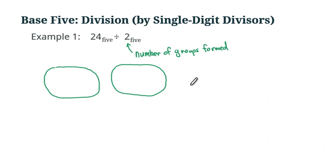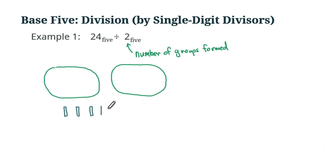We have two longs and four units for the dividend. Let me put down the pieces — actually we only want two longs, so let me correct that. Now we have two longs and then four units. Let me put down those four units.